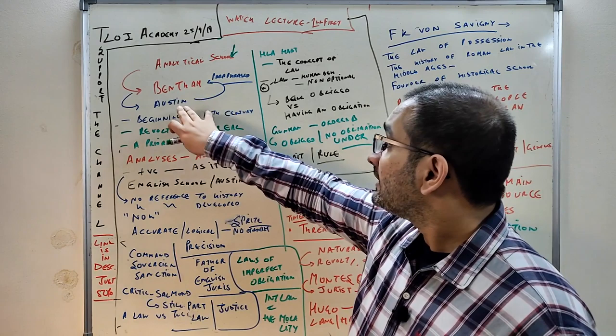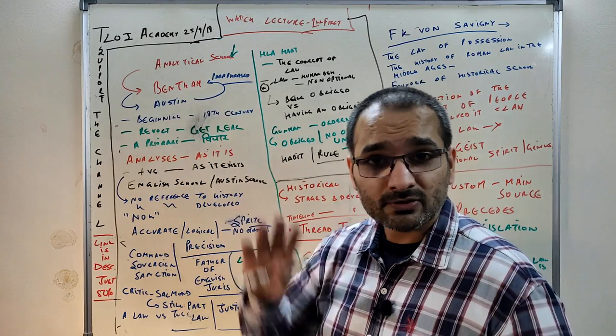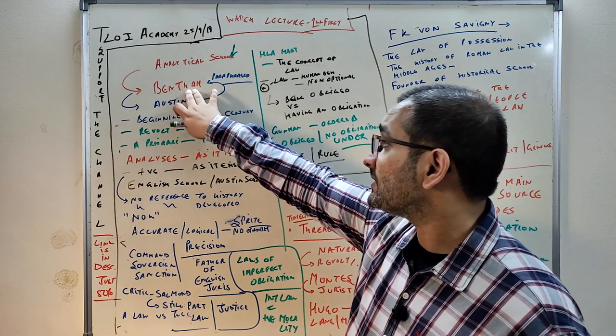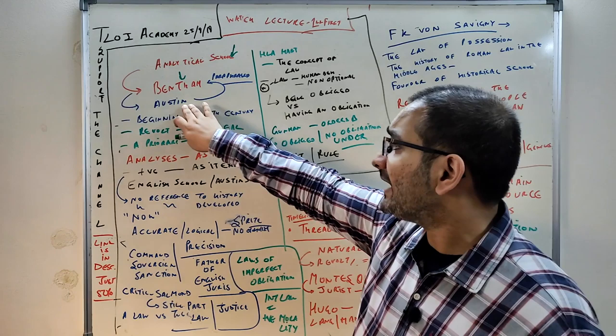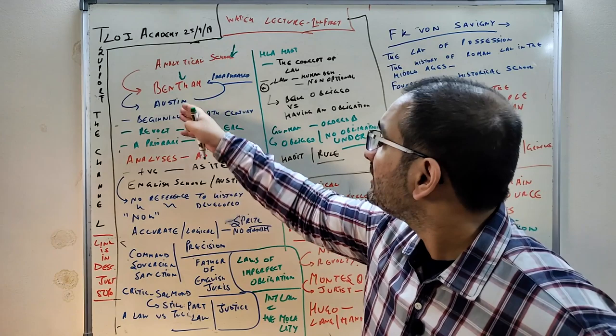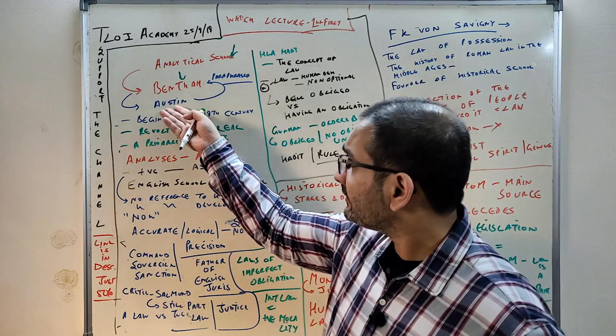Bentham came first, but Austin became more famous. Which Austin am I talking about? Not Stone Cold Steve Austin, but John Austin. He basically paraphrased Bentham. Bentham was the first guy in this school, but Austin is known as the father of English jurisprudence.